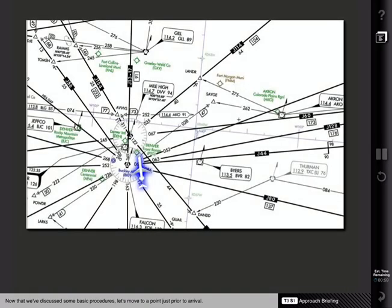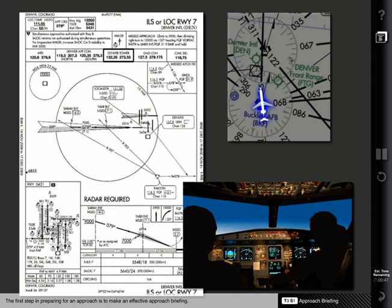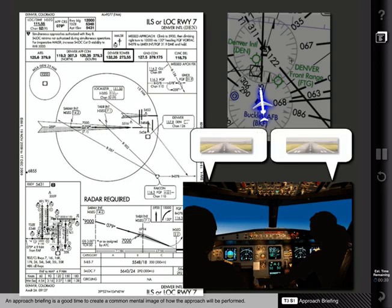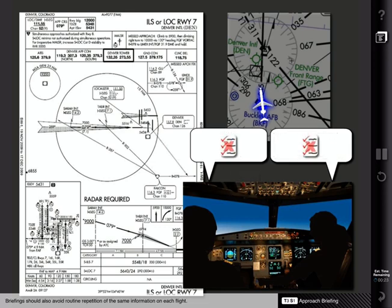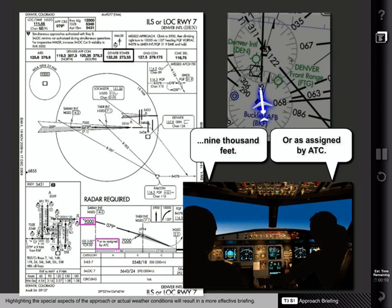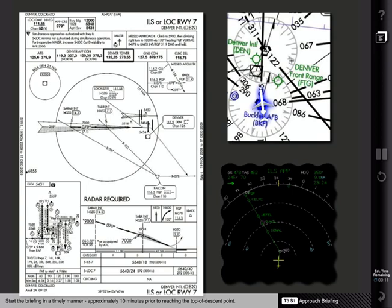Now that we've discussed some basic procedures, let's move to a point just prior to arrival. This is a good time to make sure both you and the airplane are ready for the arrival. The first step in preparing for an approach is to make an effective approach briefing. This briefing should always be conducted, regardless of familiarity with the destination airport. An approach briefing is a good time to create a common mental image of how the approach will be performed. The briefing should involve both crew members in an interactive dialogue, providing an opportunity to raise questions on the planned procedure. Briefings should avoid routine repetition of the same information, and highlighting special aspects of the approach or actual weather conditions will result in a more effective briefing. Start the briefing approximately 10 minutes prior to reaching the top of descent point, which will reduce the likelihood of making mistakes as a result of time constraints.